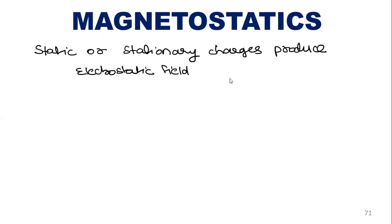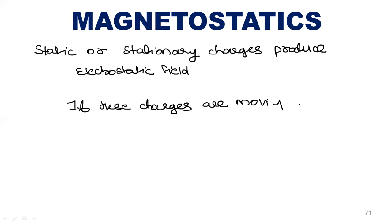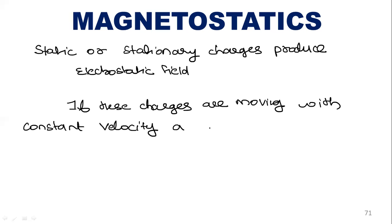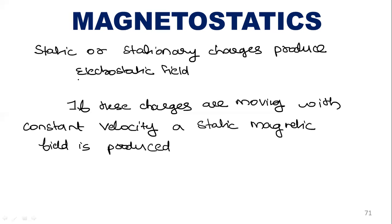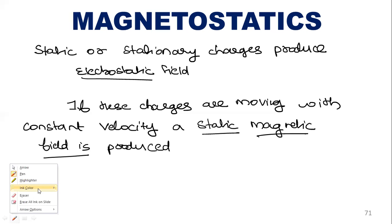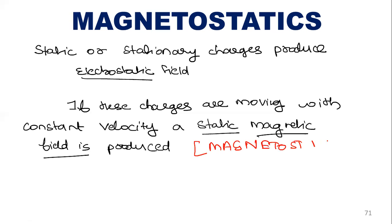Now consider a case where these charges are moving with some constant velocity. If these charges are moving with constant velocity, a static magnetic field is produced. So if the charges were stationary, we get an electrostatic field; if the charges are moving with constant velocity, a static magnetic field will be produced, and that study is what we call magnetostatics.